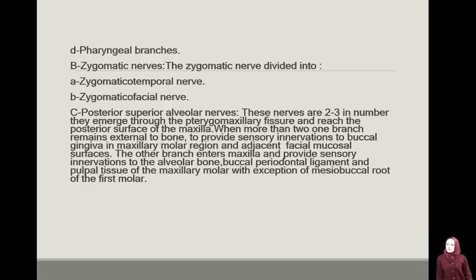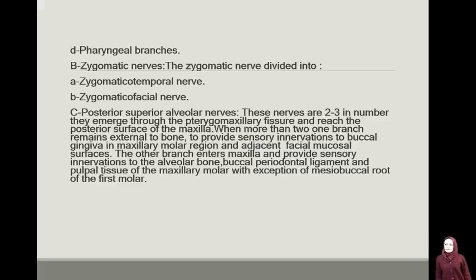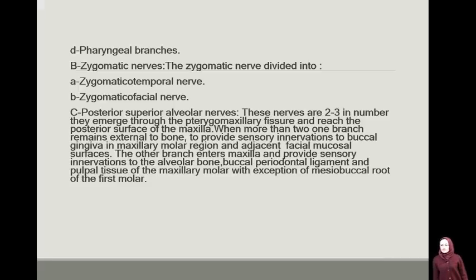D) Pharyngeal branches. E) Zygomatic nerve, divided into A) zygomaticotemporal nerve, B) zygomaticofacial nerve. C) Posterior superior alveolar nerve.